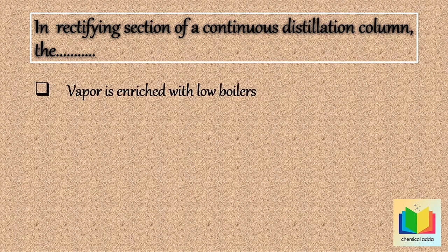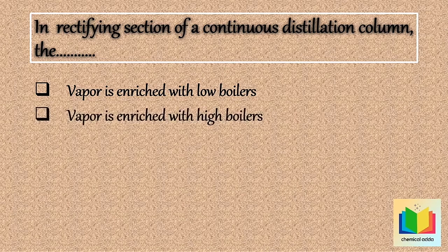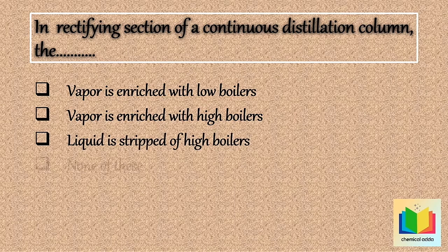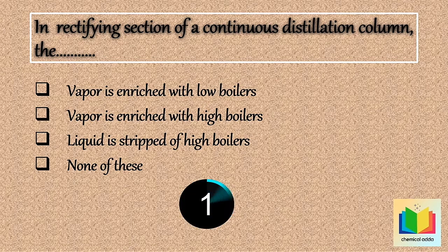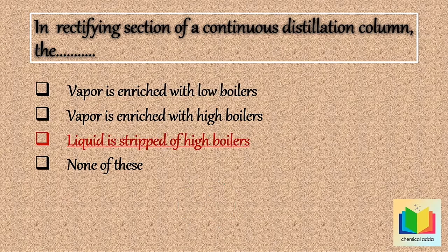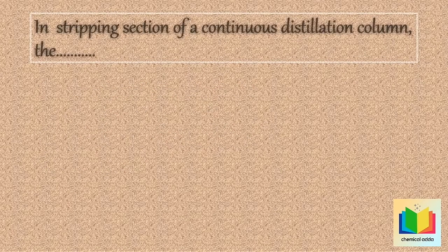Now next question: In the rectifying section of a continuous distillation column, the vapor is enriched with low boilers; vapor is enriched with high boilers; liquid is stripped of high boilers; or none of these. Your time starts now. 10, 9, 8, 7, 6, 5, 4, 3, 2, 1. Stop. So the answer is: Vapor is enriched with low boilers.